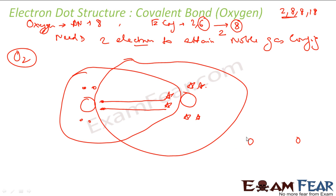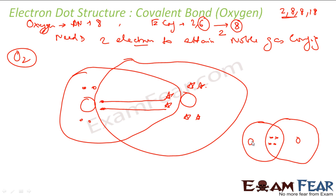Generally we draw it like this: one oxygen with six electrons, two of which go into the shared pool, and the other oxygen similarly contributes two. So there are four electrons in the shared pool. Using dots for one atom and stars for the other to distinguish which electrons came from which atom, each oxygen contributes two to the shared pool and each oxygen ends up feeling it has eight electrons.